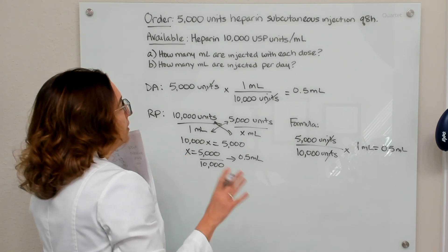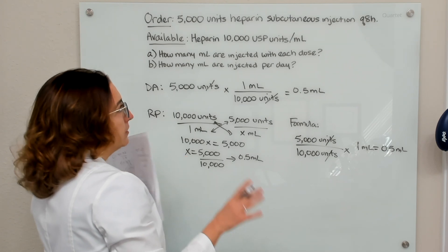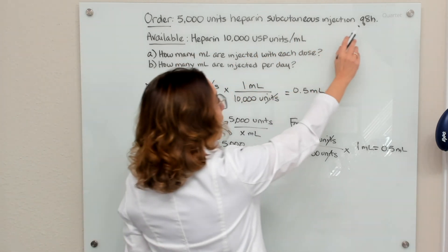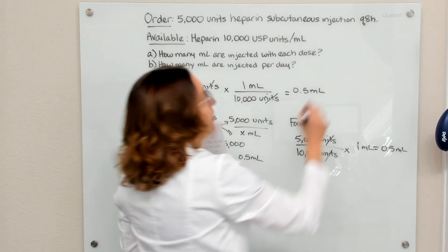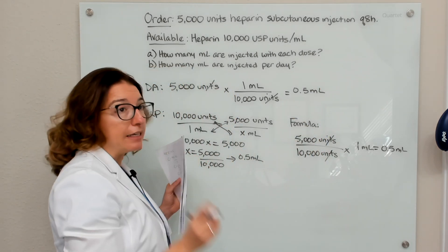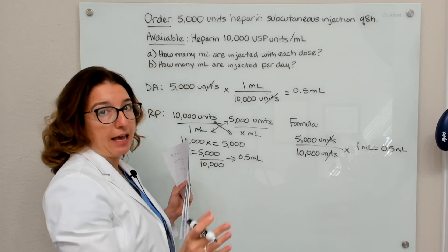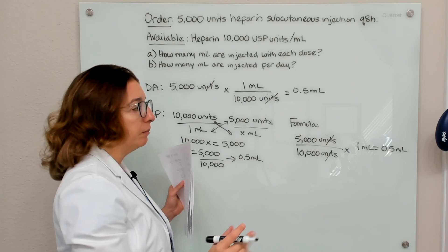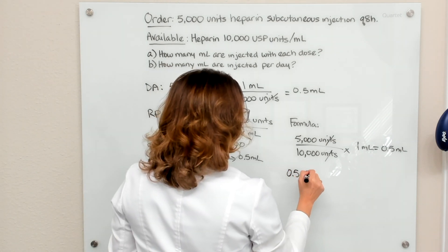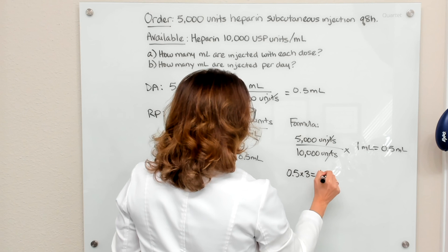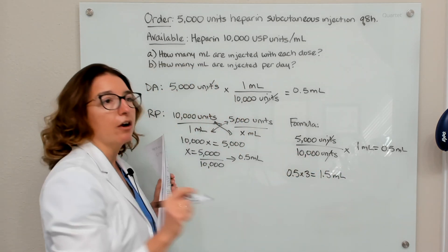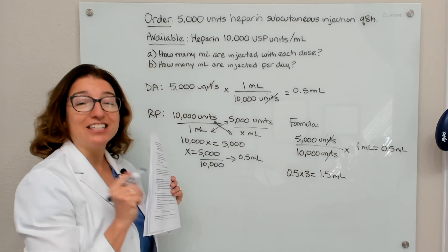How much is administered per day? We're giving heparin Q8H — every eight hours — which means three times in a 24-hour period. So 0.5 times 3 equals 1.5 ml. That's how much we are giving each day.